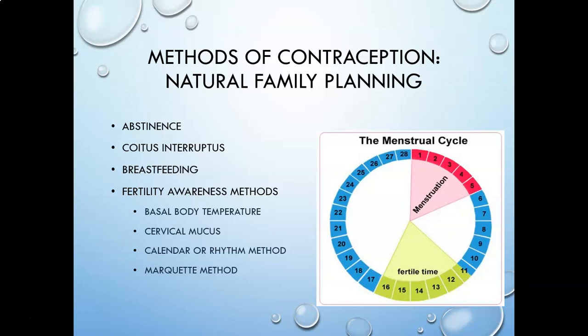If you pull out the chart available to you under Week 1 content, there is a section on contraception — I'd recommend using that as I go through these methods to fill in and organize the information. Again, abstinence is the only 100% effective method. It is the avoidance of any sexual intercourse and is 100% effective for both pregnancy and STIs.